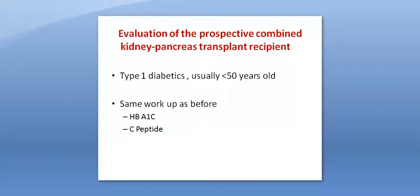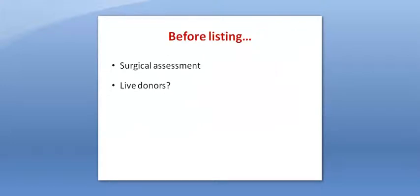Patients who are type 1 diabetics and usually less than the age of 50 should be considered for simultaneous kidney-pancreas transplant. In addition to the previous workup and investigations, HbA1c and C-peptide should be done to confirm that they are type 1 diabetics and not type 2. After completing all history, examination, and investigation, if the patient has passed all that successfully, the next step is referral for surgical assessment, or if the transplant surgeon is part of the MDT clinic, that would be straightforward.